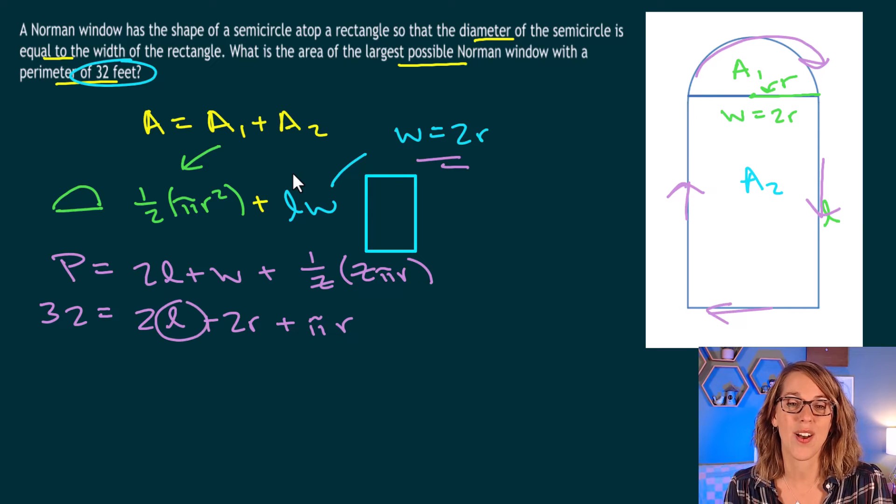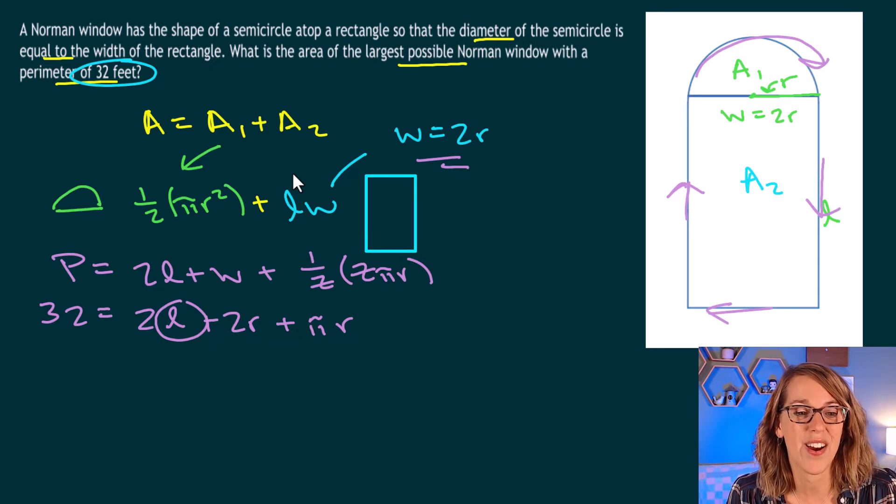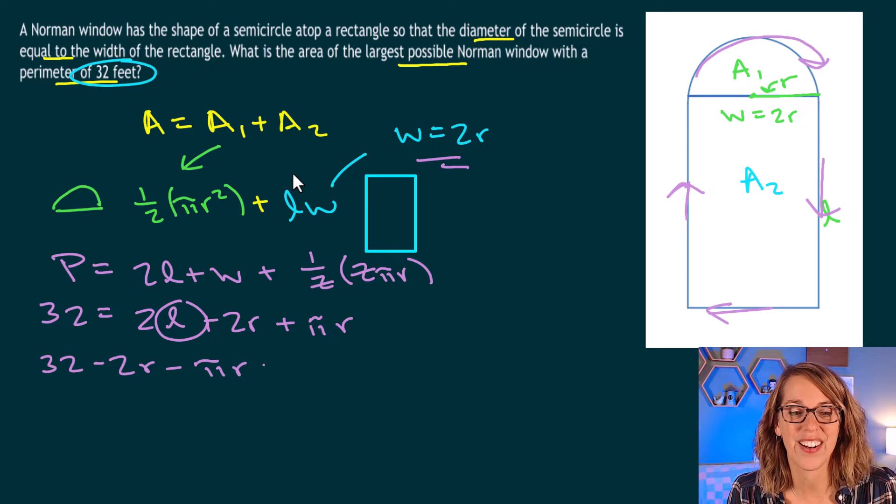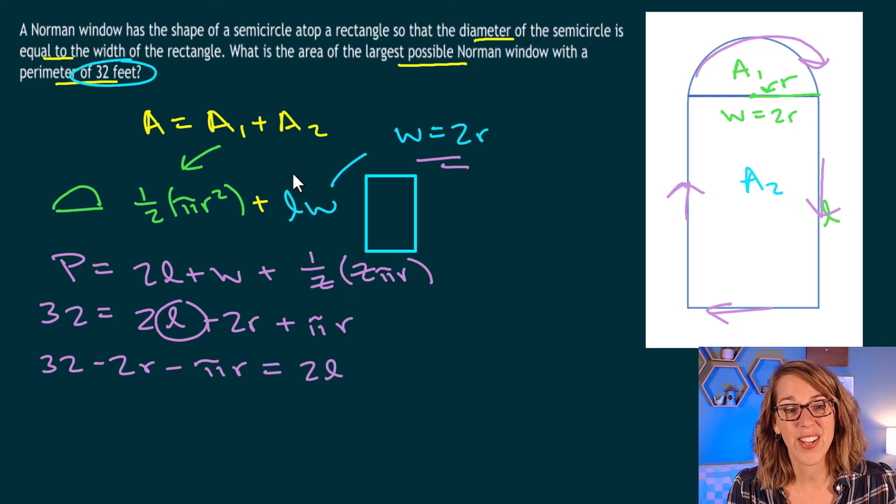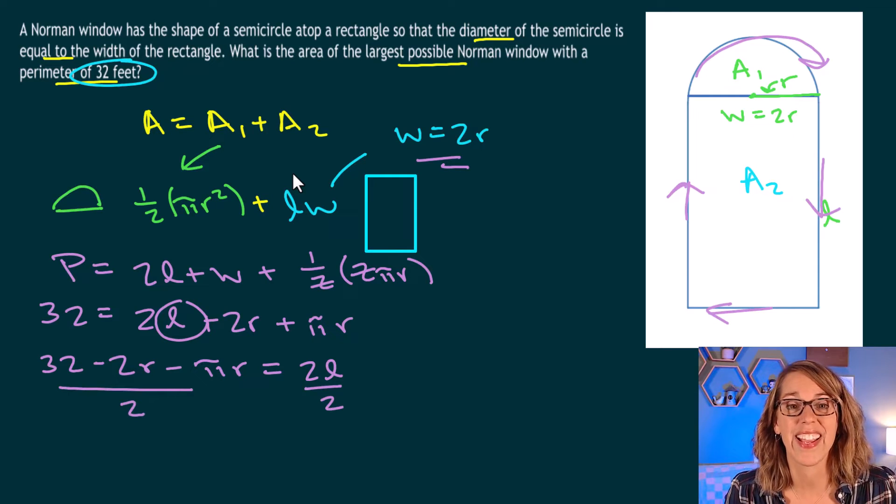Now I can go ahead and solve for l. I'm going to bring my two terms that 2r and pi r to the other side. So 32 minus 2r minus pi r is equal to 2l, and all I've got to do to solve for l now is to divide everybody by a 2.